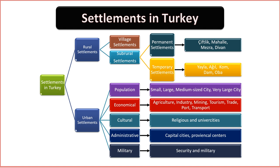Urban Settlements. 1. Population and Economic Functions. Urban settlements are classified based on population size, ranging from small towns to megacities, including small, medium-sized, large, metropolises, and megapolises. Economic functions further diversify urban areas, including trade, industry, tourism, mining, religious, university, and military cities. 2. Administrative Structure. Capital cities, provincial centers, and district centers define the hierarchy of urban settlements. Capital cities serve as the political epicenter, provincial centers oversee broader regions, and district centers play a localized administrative role.